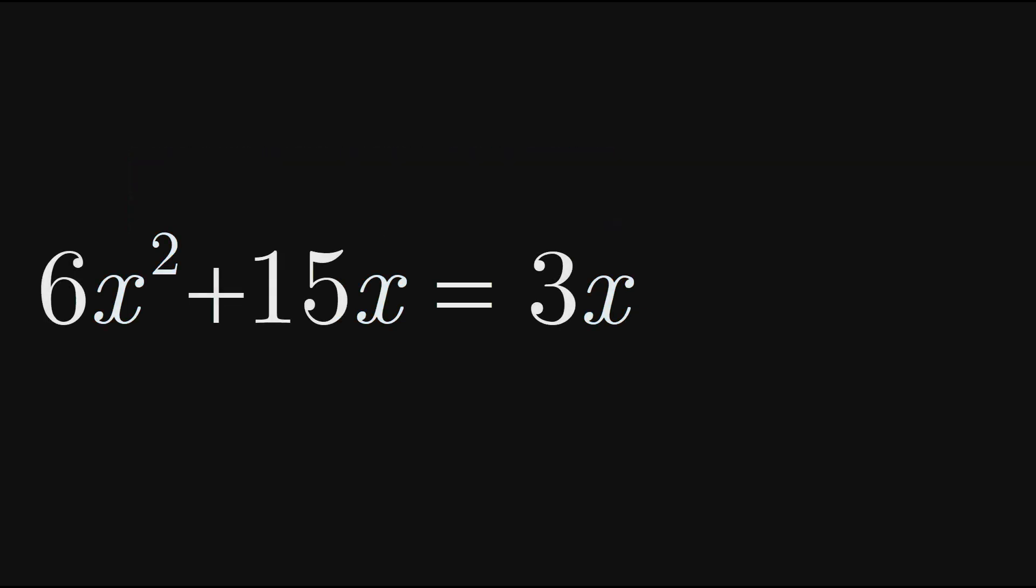To finish factoring the expression, we need to think about what 3x must be multiplied by to give the original expression of 6x squared plus 15x. To get the first term in our brackets, think about what we would multiply 3x by to get 6x squared. Since 3x times 2x is 6x squared, we want to include 2x as a term in the brackets.